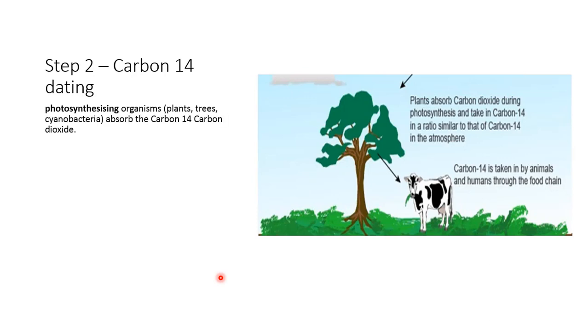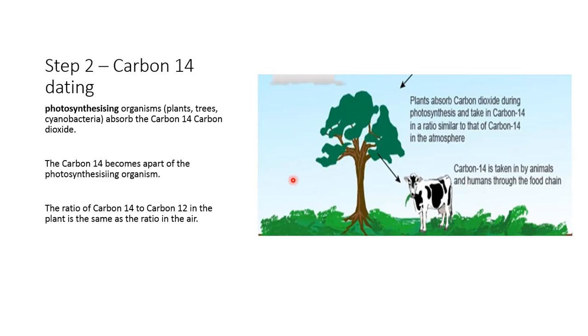So photosynthesizing organisms like plants, trees, cyanobacteria, they tend to absorb the carbon-14 or the carbon dioxide along with absorbing regular carbon. So they have a small amount of carbon-14 in them. The carbon-14 becomes a part of the photosynthesizing organism. But the ratio of carbon-14 to carbon-12 in the plant is the same as the air. Since the plant is absorbing this carbon-14 from the air, of course it's going to have the same ratio of carbon-14 to carbon-12 as the air does.